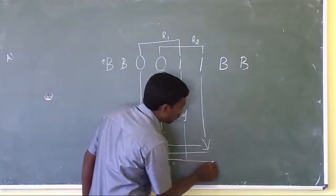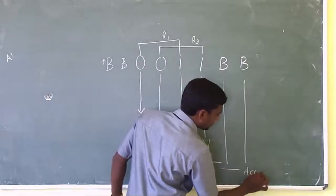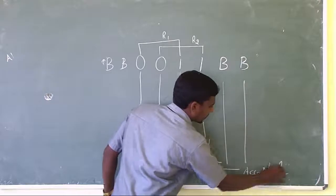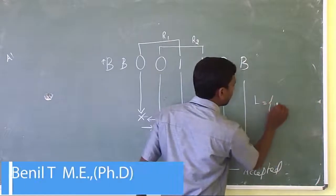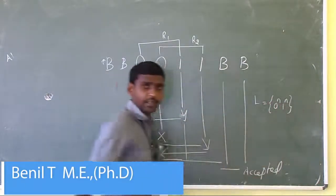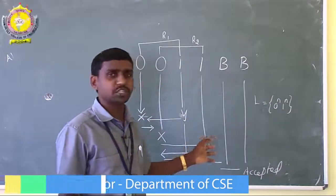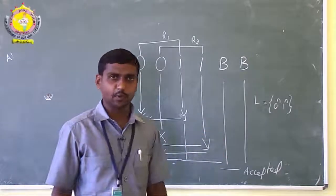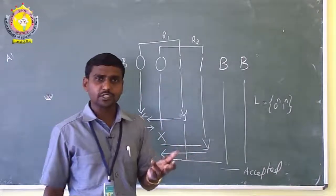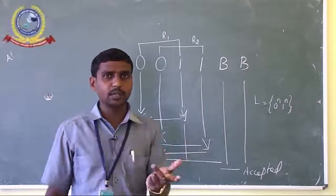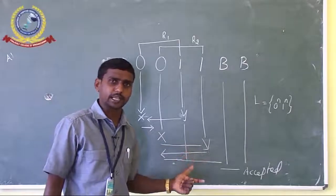The control moves to the first blank and then the second blank — it is accepted. This is the concept of the Turing machine accepting the language L equal to zero power n and one power n. In the next session we will see the transition function, transition table, and transition diagram.